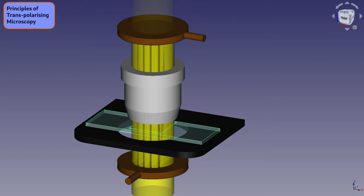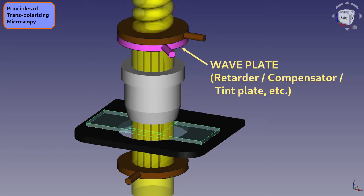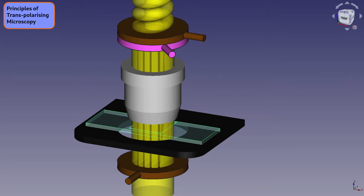For some observations, we can gain more information about the birefringence of specimens by inserting a phase retarder plate between the objective and the analyzer, such as a quarter-wave plate retarder. The retarder is generally orientated such that its slow axis is at 45 degrees to the plane of polarization of the analyzer.